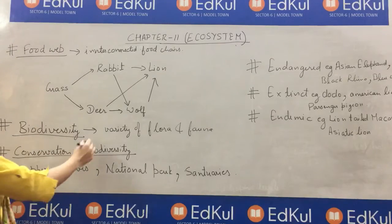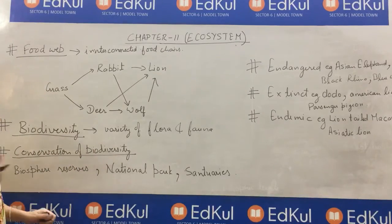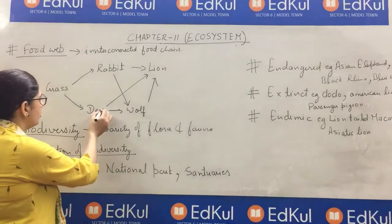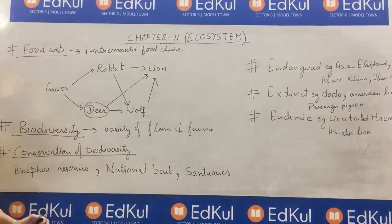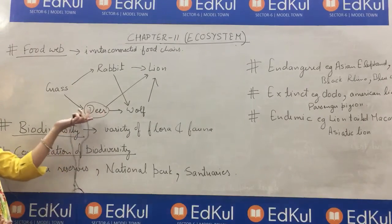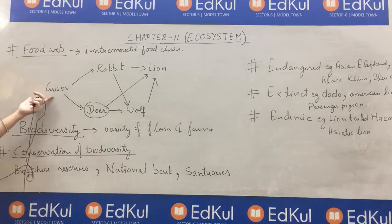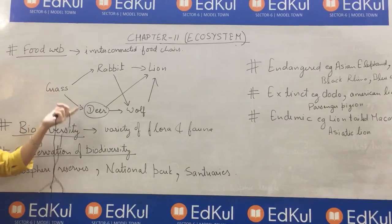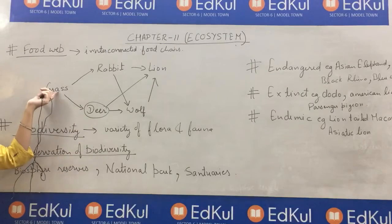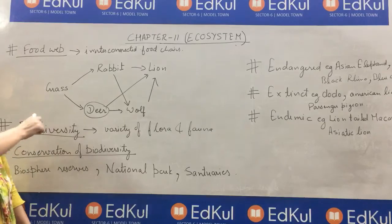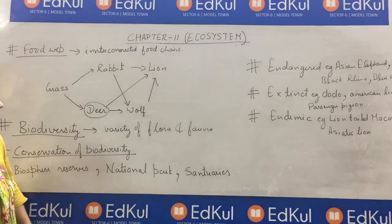If, due to any sort of reason, this deer becomes extinct — what happens? If deer goes extinct, then the quantity of grass is going to increase, because deer eats grass. So in that particular ecosystem, the quantity of grass will be more.